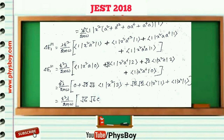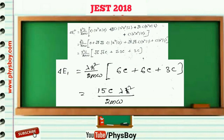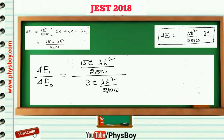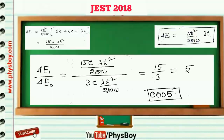Inserting the matrix element values of x-squared in terms of the expectation value in the ground state given in the question, we get the first-order energy correction of the harmonic oscillator for the first excited state: delta-E1 equal to 15c lambda h-bar squared over 2m-omega. So the ratio delta-E1 over delta-E0 is equal to 5. The correct answer is 5.